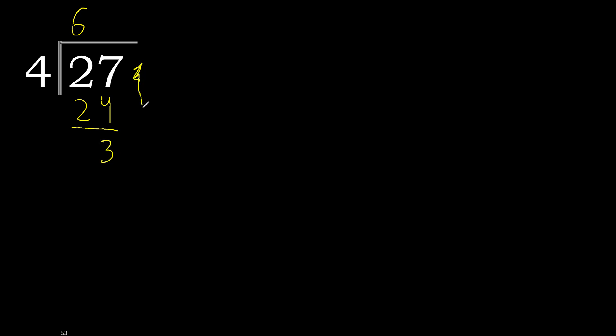Here there is no number, therefore always complete with 0. Place the decimal point here. Bring down the 0 — now we have 30.